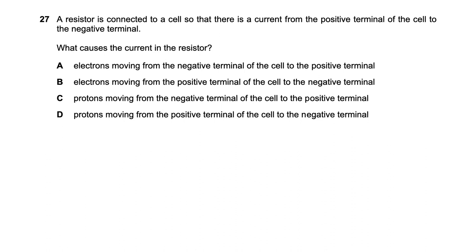Question twenty-seven: a resistor is connected to a cell with current flowing from the positive terminal. Options C and D involve protons — electricity has nothing to do with proton movement, so those are eliminated. Electrons move from the negative terminal to the positive terminal — this is conventional current direction, which was defined before electron properties were fully understood. So option A — electrons moving from the negative terminal of the cell to the positive terminal — is the right answer.